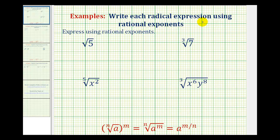We want to write each radical expression using rational exponents. To do this in radical form, we need to identify the index of the radical, which will be the denominator of the rational exponent.